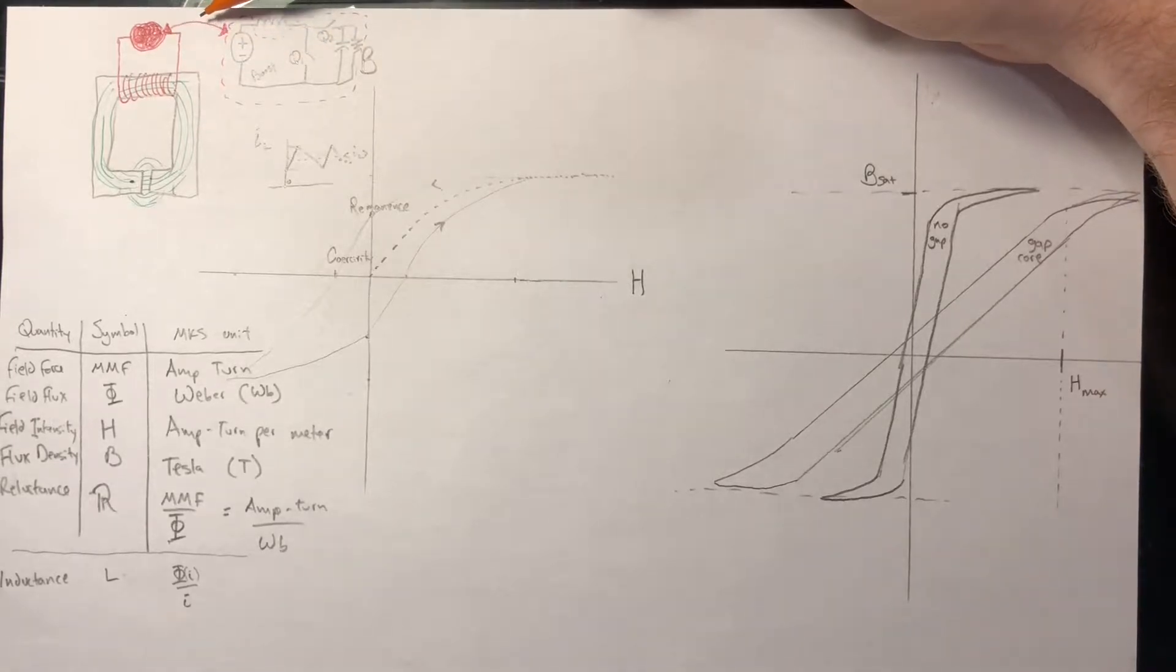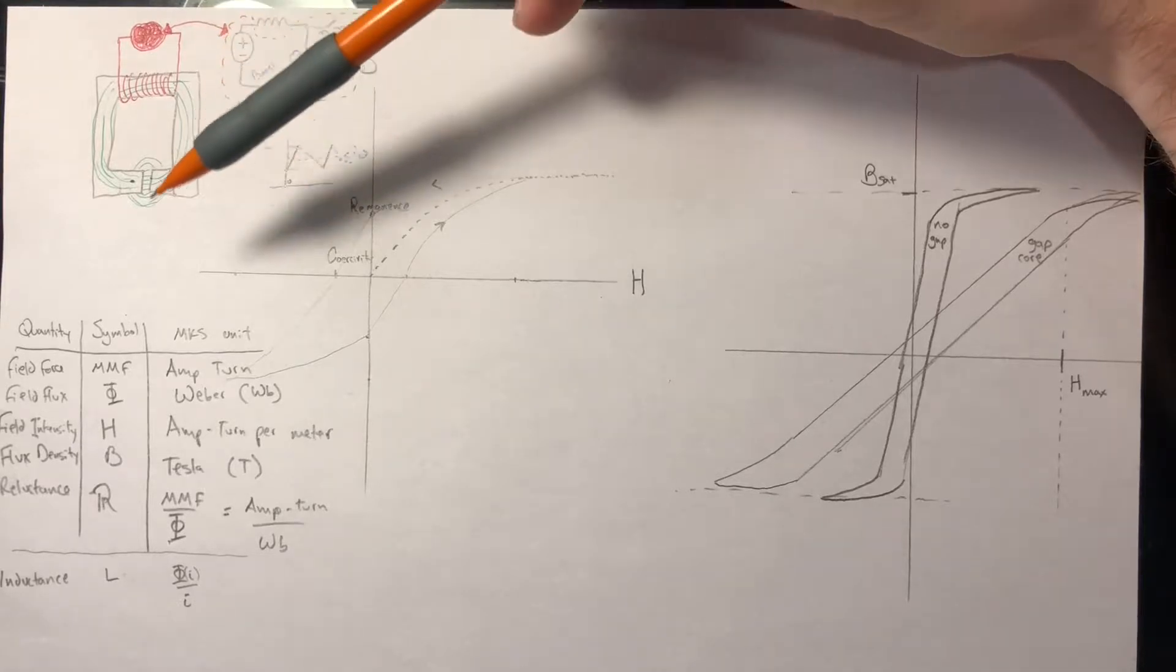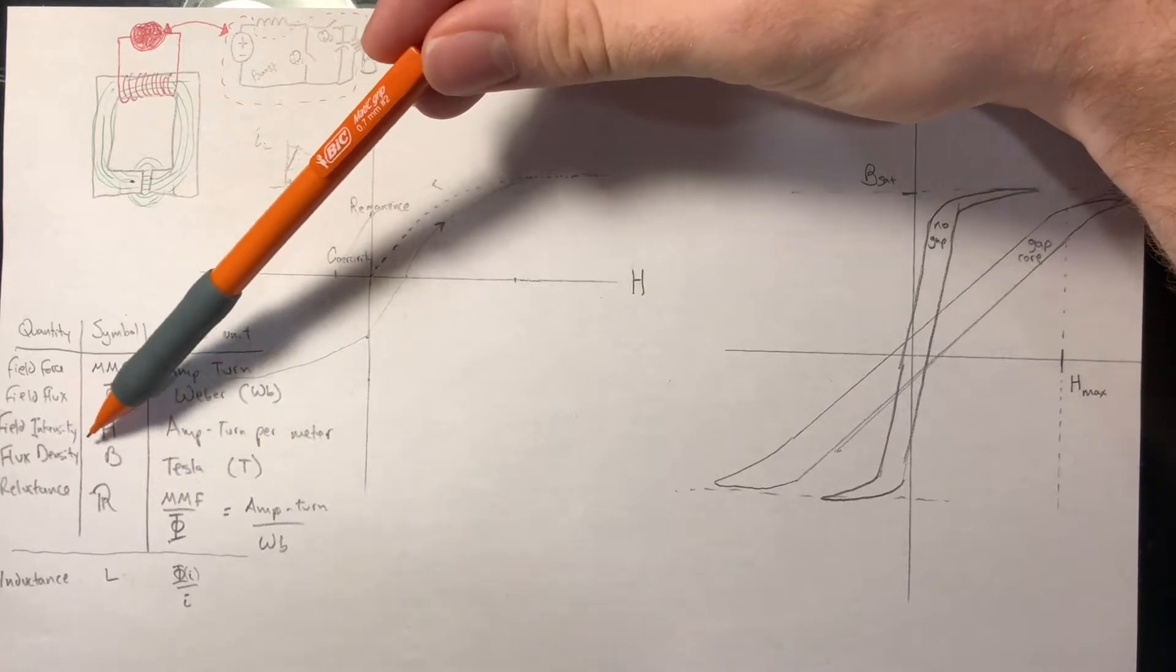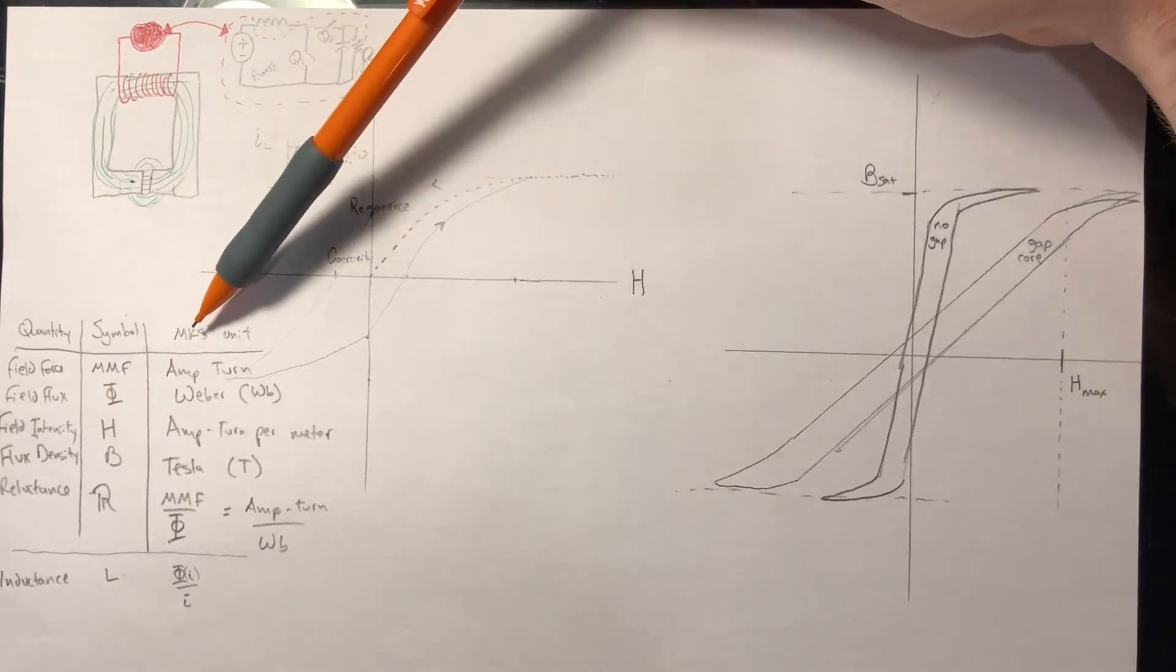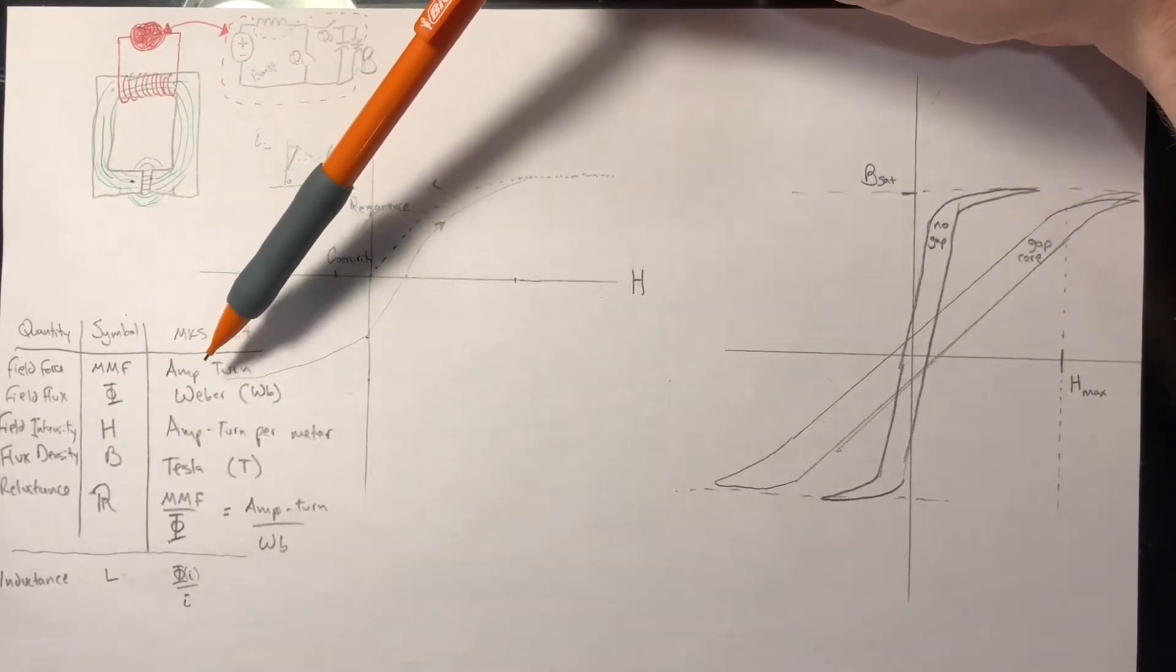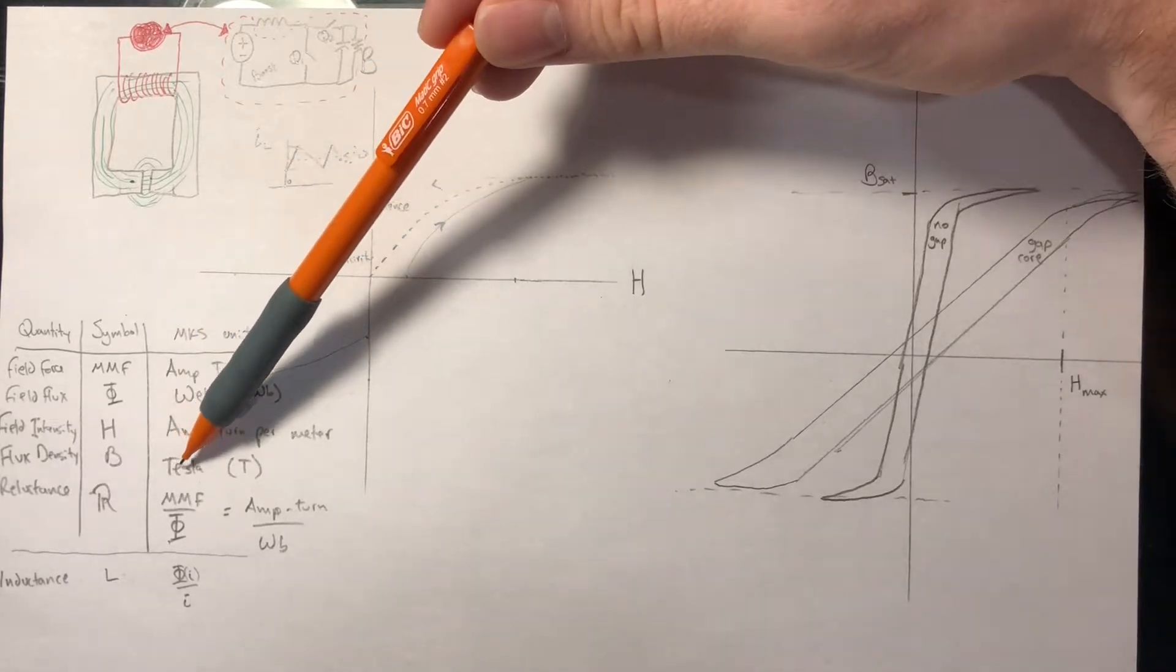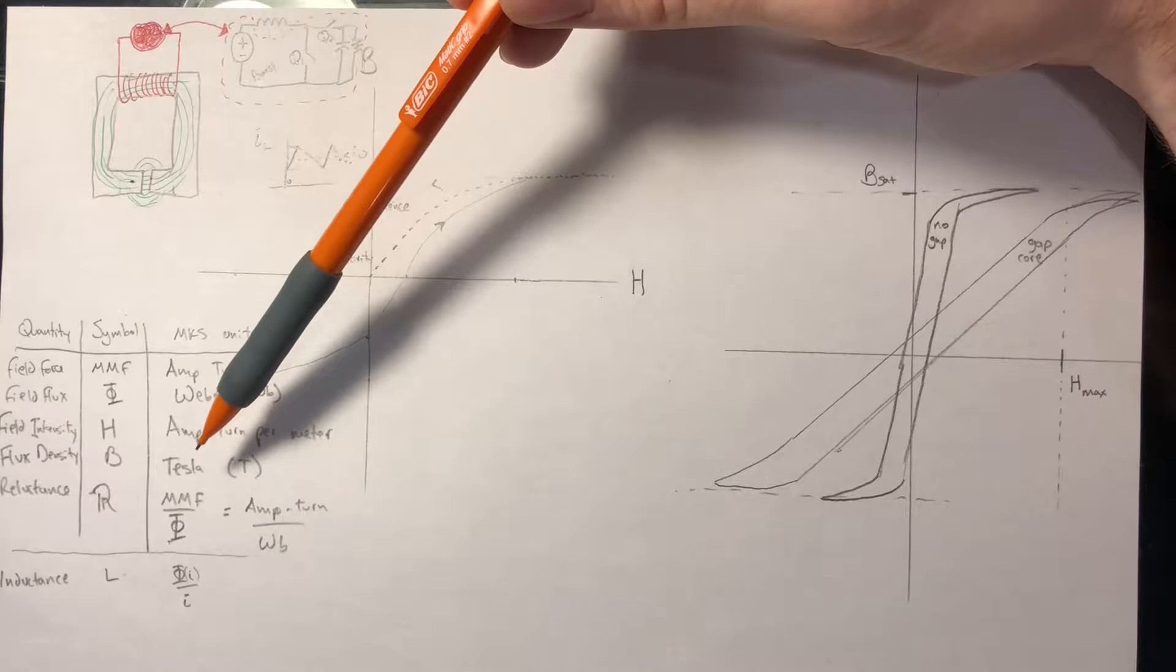The actual amount of magnetic flux is hard to measure, however B, or the magnetic flux density, is more manageable. Here we can see we're using the MKS units, which is meters, kilograms, second, and in this case Tesla is the unit for magnetic flux density.